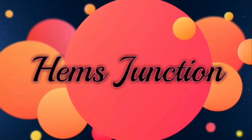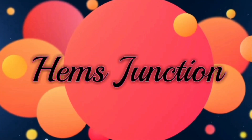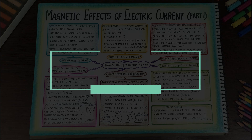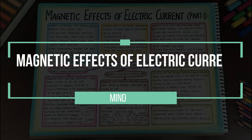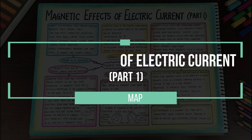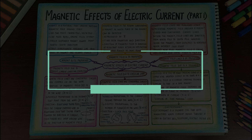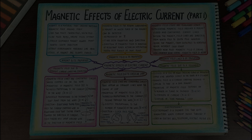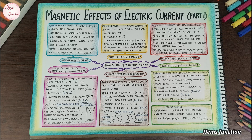Hello everyone, welcome to Hames Junction, sharing the mind map of the class 10 science chapter, Magnetic Effects of Electric Current. This is part 1 of the mind map.